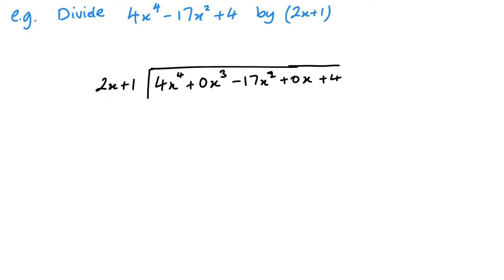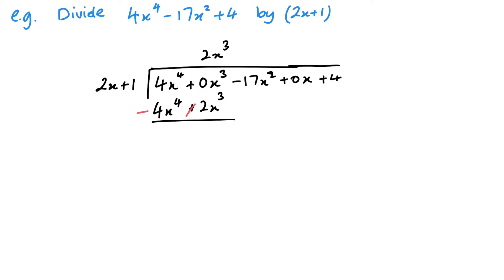From here it's a straightforward long division just like before. Start with 4x to the power of 4 divided by 2x — that gives me 2x cubed, which I put above the x cubed column. Then 2x cubed times 2x is 4x to the power of 4, and 2x cubed times 1 is 2x cubed. You can see why it's important: without the 0x cubed placeholder, terms wouldn't line up correctly and it wouldn't make logical sense.